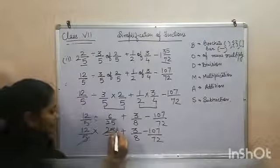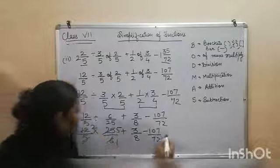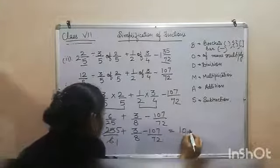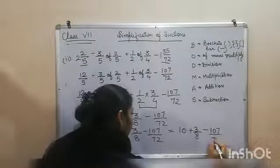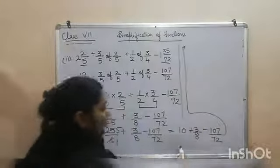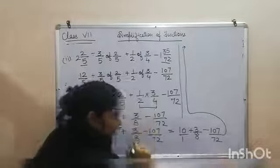Cancel it. What we will be getting? We will be getting 10 plus 3 by 8 minus 107 by 72. We have to take the LCM of 8 and 72.